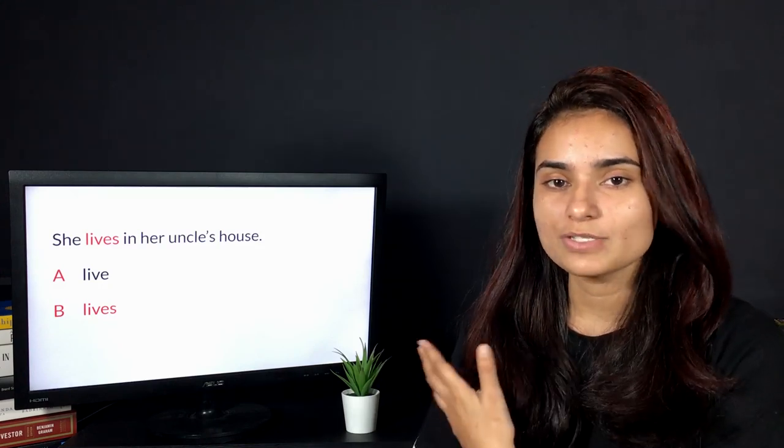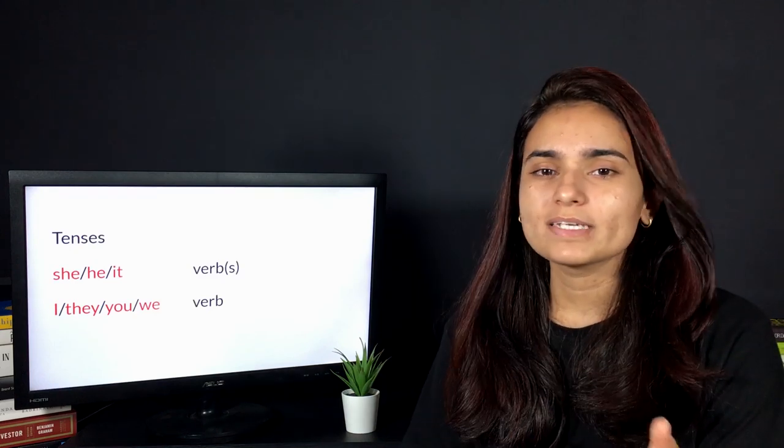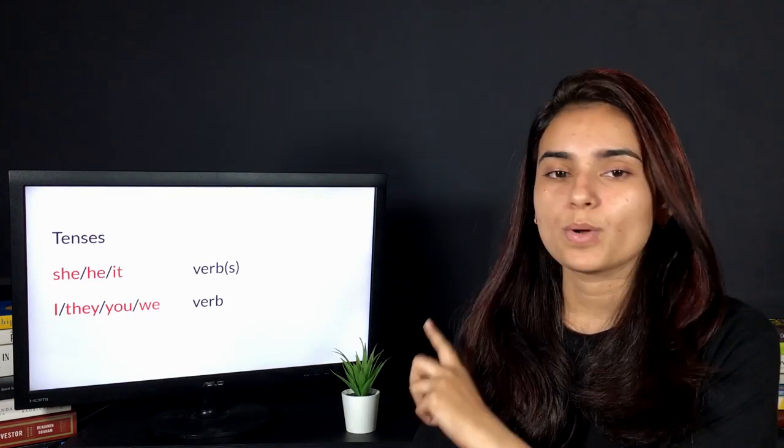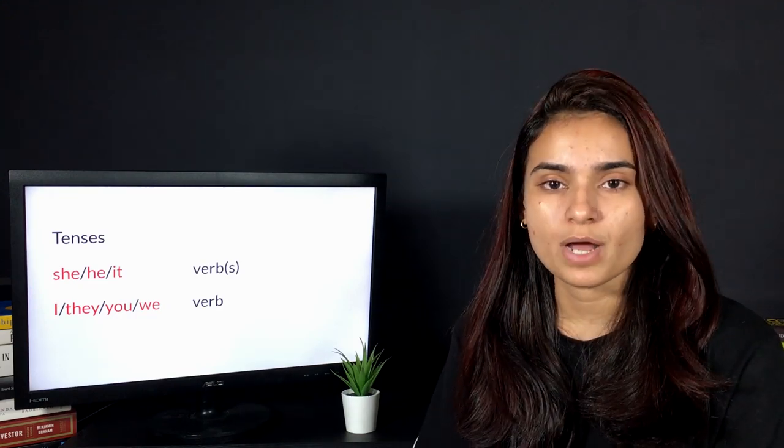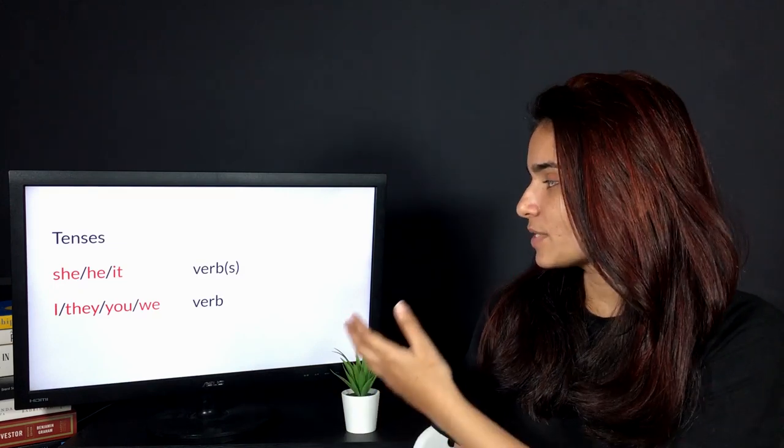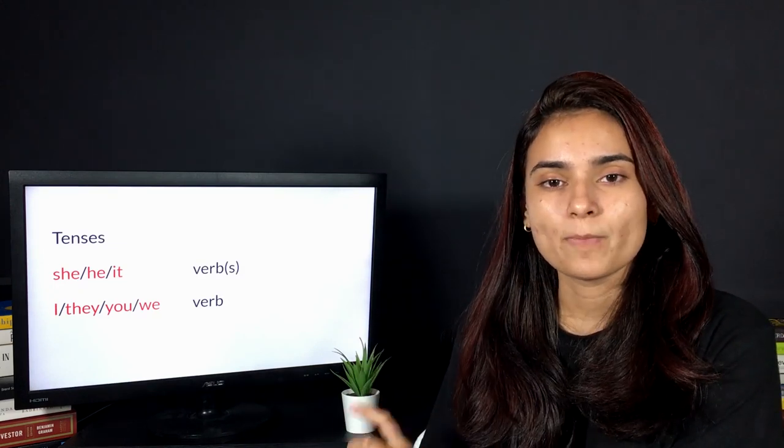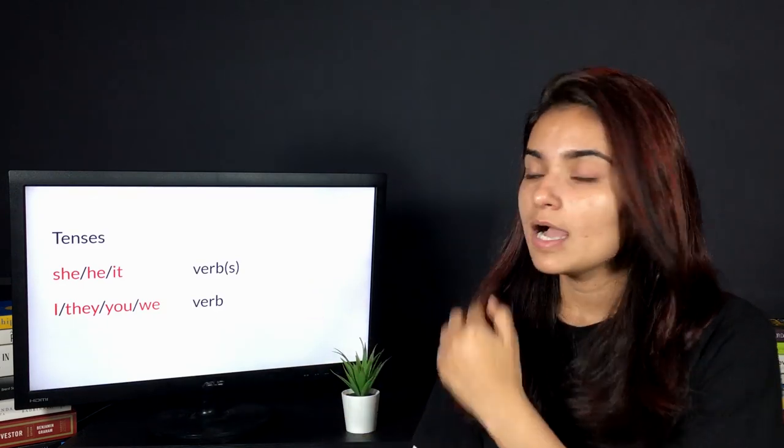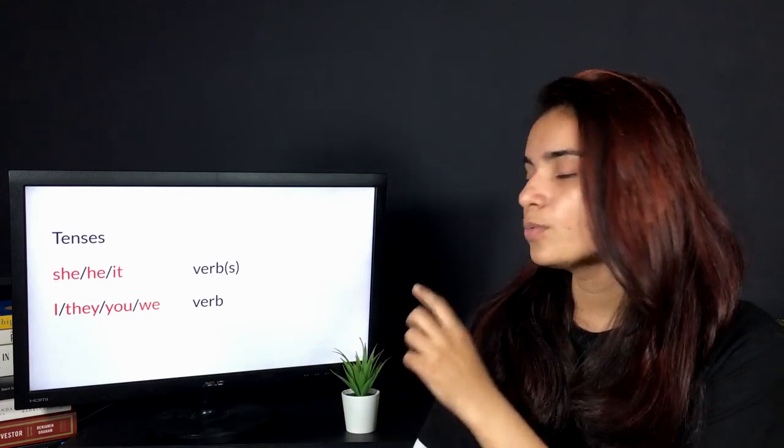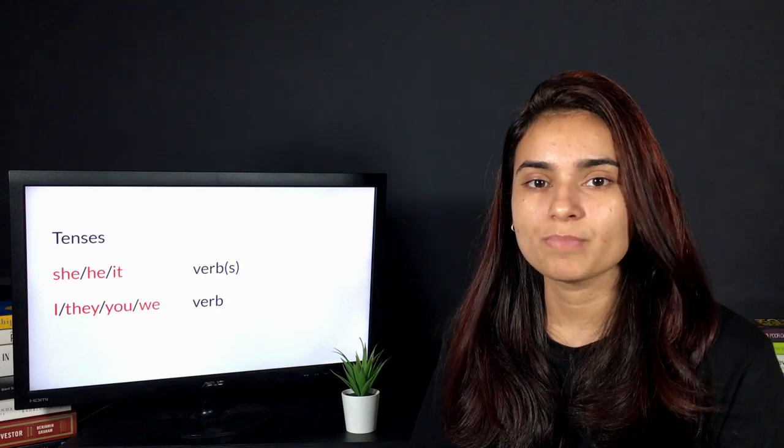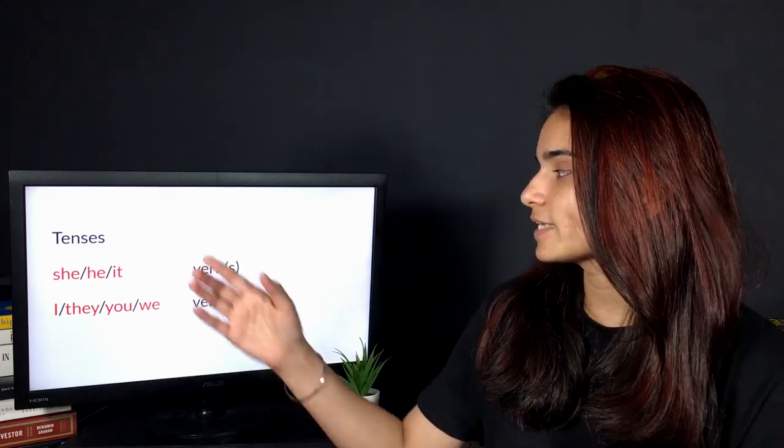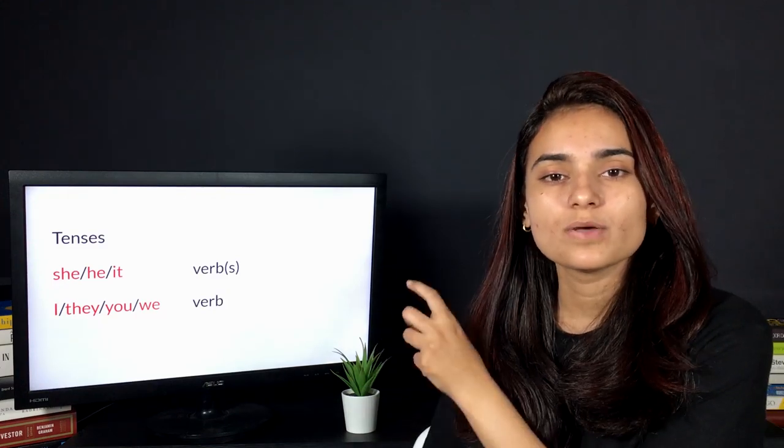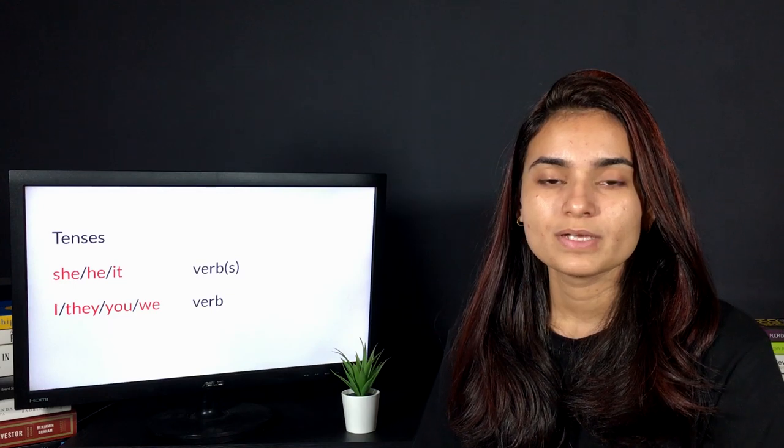The rule behind this answer is if you might have studied tenses, specifically simple present tense, there is a concept that if you have she, he, or it—that's a singular form of pronoun or noun—we put the verb in the s form. In this case, the verb was live, and hence we kept it lives. If you have I, they, you, or we, which are plural, the verb remains in its simple form. I is an exception here; it doesn't fall into the category of he, she, and it.